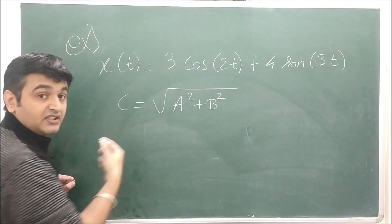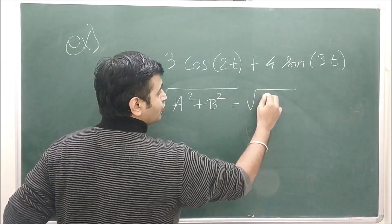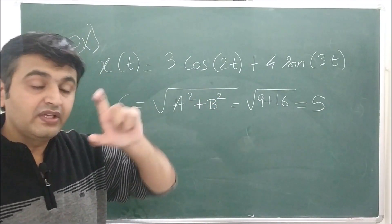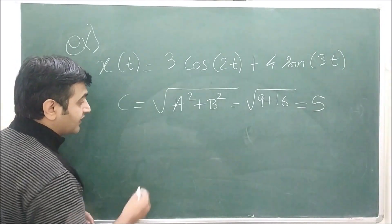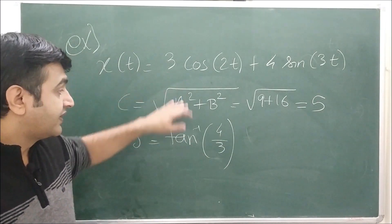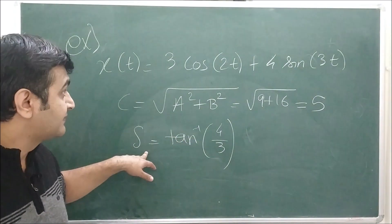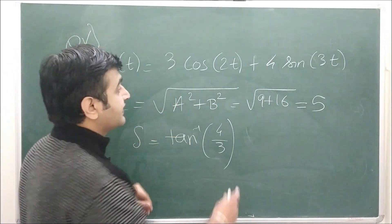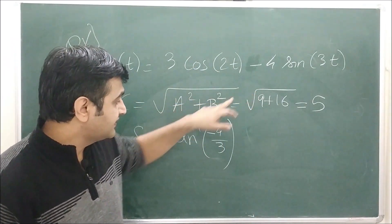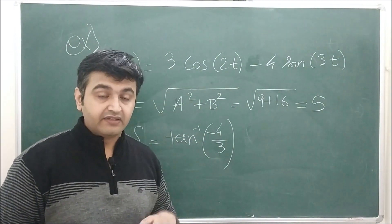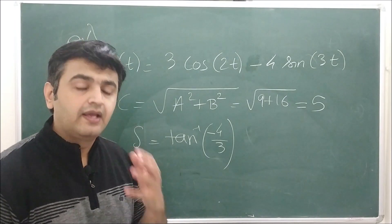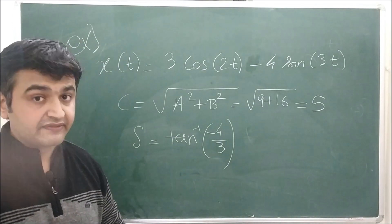Now let's see an example. Suppose the solution of an undamped mass-spring system is x(t) = 3·cos(ωt) + 4·sin(ωt). The amplitude is C = √(3² + 4²) = √(9 + 16) = √25 = 5 units. The phase shift angle is δ = arctan(4/3). Since both A = 3 and B = 4 are positive, δ lies in the first quadrant. If the signs were different you would need to determine the correct quadrant carefully.